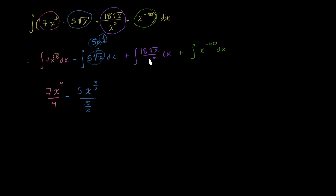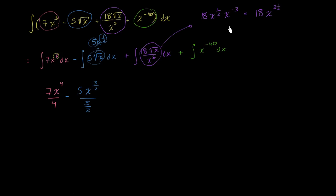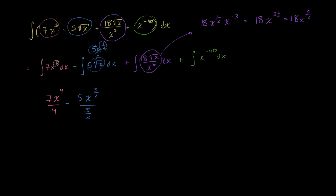The next expression looks even wackier, but we can simplify. 18√x over x³ is the same as 18 times x^(1/2) times x^(−3). Since they have the same base, we add the exponents: 1/2 plus (−6/2) equals −5/2. So this simplifies to 18 times x to the negative 5/2 power.